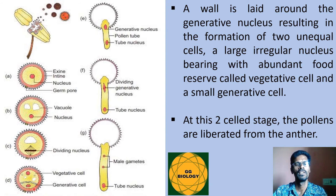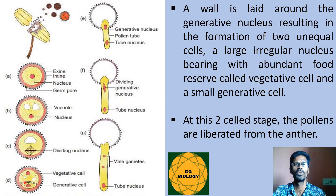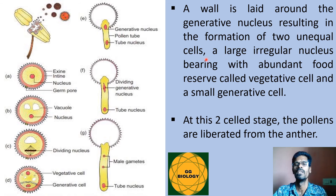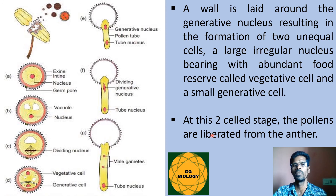After division into vegetative and generative nuclei, a partition wall forms between the cells, producing two unequal-sized cells: a larger vegetative cell containing the vegetative nucleus, and a smaller generative cell containing the generative nucleus. At this two-cell stage, the pollen grains are liberated from the anther — this is an important point to note.